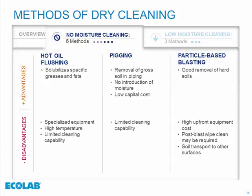Pigging involves plastic bullet-like inserts that fit inside pipes in many different sizes. You push a pig in at the start of a piping run and it comes out at the end or at a T-junction, scraping the inside of the pipe to mechanically remove gross soil. This doesn't introduce moisture and is a low capital investment. A disadvantage is limited cleaning capability — like compressed air, it moves soil from hard-to-reach places inside piping to an easier-to-reach place at the outlet, where you can then clean it up.